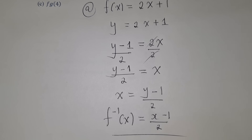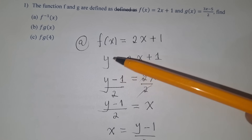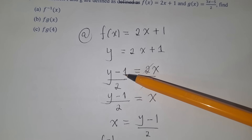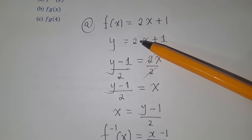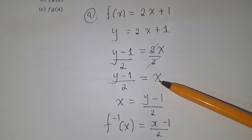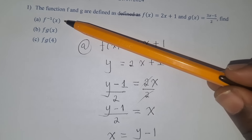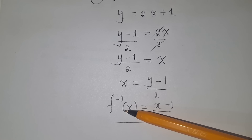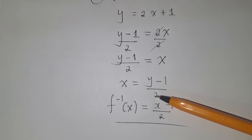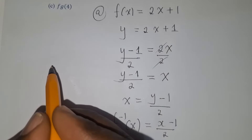The idea is to get x alone: bring the 1 across so it becomes y − 1, then divide both sides by 2. Where there is x, write f inverse of x, and where there is y, write x, keeping −1 and 2 as they are. That is the answer for part a.